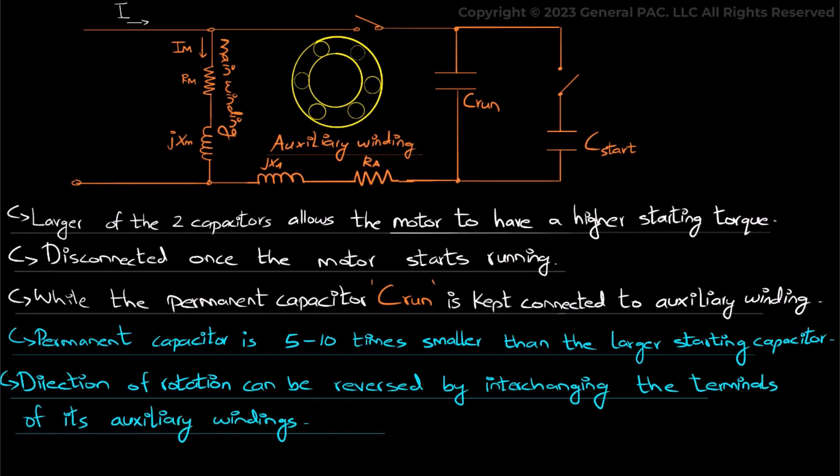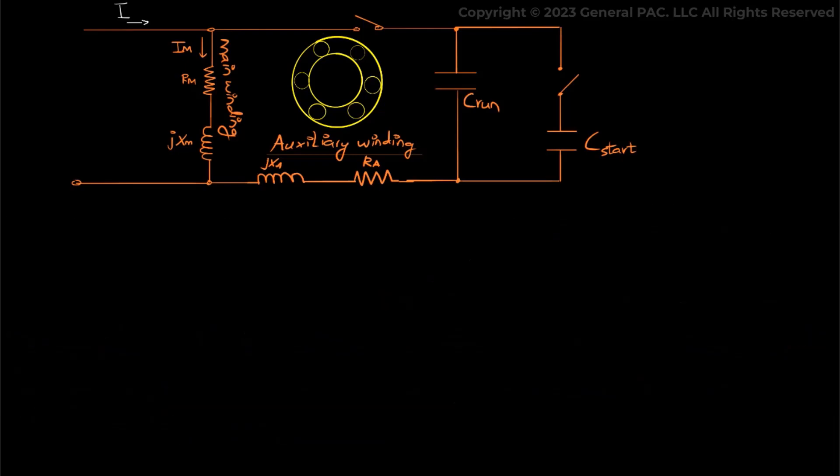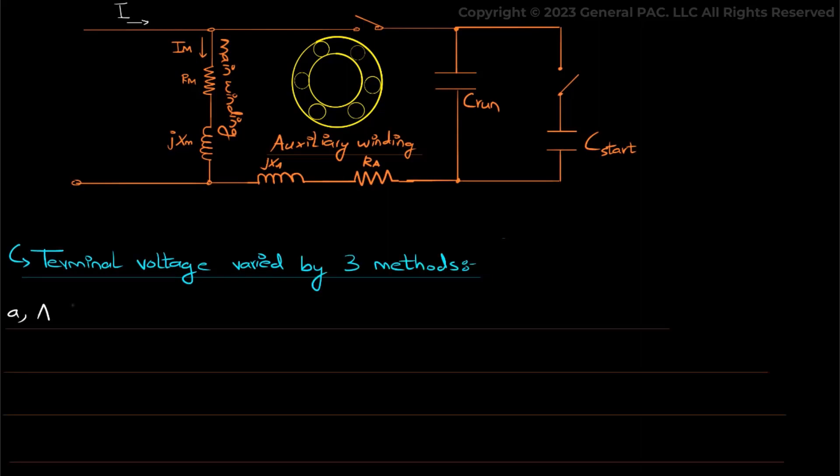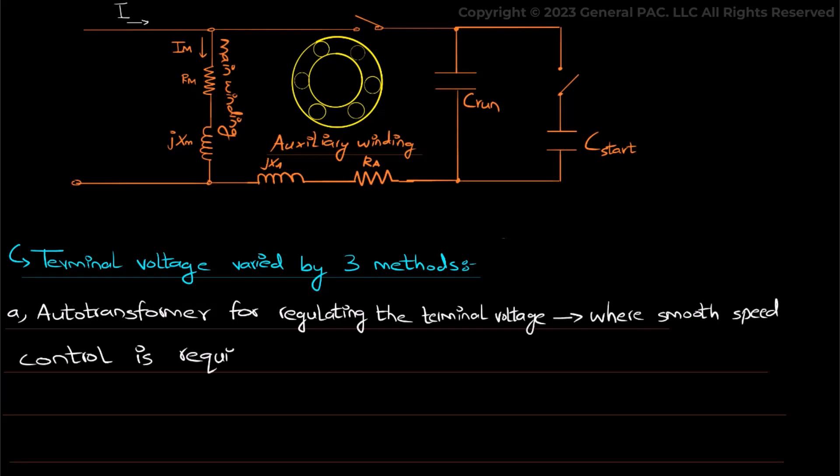So this is beautifully executed. And a convenient way here to vary the speed characteristic of a single phase motor is to vary the terminal voltage. And it can be verified by three methods. Either by using an autotransformer for regulating the terminal voltage which is used where a smooth speed control is required, but this is the most expensive method.